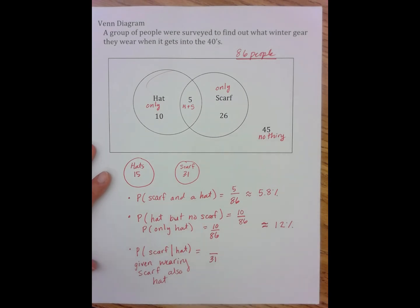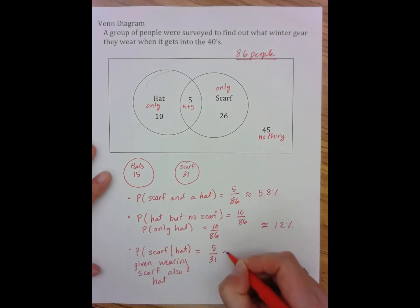I've taken just the people who wear a scarf and I've set them aside. And of those 31 people, 5 of them are also wearing a hat. And so I have 5 out of 31, which is approximately 33%.